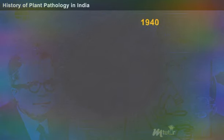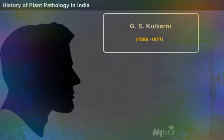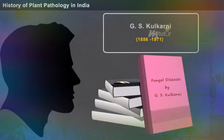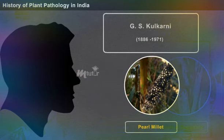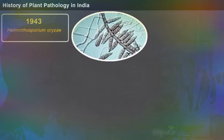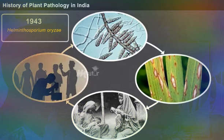Later, in 1940, Dr. K. C. Mehta of Agra College investigated the life cycle of cereal rusts. G. S. Kulkarni (1886–1971) published comprehensive information on downy mildew and smuts of sugarcane and pearl millet. In 1943, Helminthosporium oryzae, the causative organism for the Great Bengal Famine, resulted in the death of 2 million people and drew the attention of several plant pathologists.